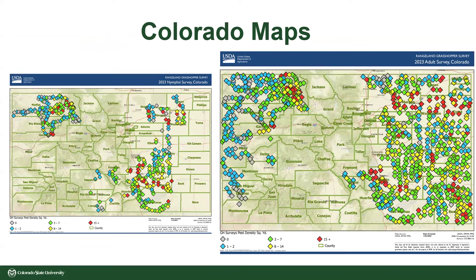These are maps from last year that explain why we're seeing what we're seeing. The first smaller map shows nymphs — the baby ones without wings. The minute they have wings, they're considered adults. In Pueblo, the darker the color the worse off it is. The red represents 15-plus per square yard. I told the surveyors those counts felt light for last year, and they agreed — which is why we need accurate counts this year.